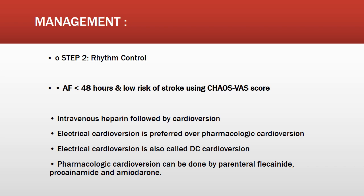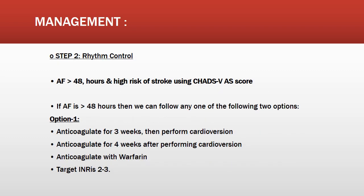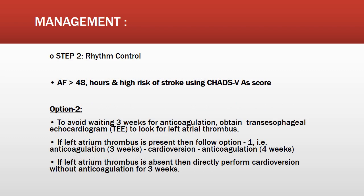If AF is more than 48 hours with high stroke risk by CHA₂DS₂-VASc score, follow one of two options. Option 1: anticoagulate with warfarin (target INR 2–3) for three weeks, then perform cardioversion, then anticoagulate for four weeks post-cardioversion. Option 2: skip the three-week pre-cardioversion anticoagulation and perform a transesophageal echocardiogram to look for left atrial thrombus. If thrombus is present, follow Option 1; if absent, proceed directly to cardioversion.